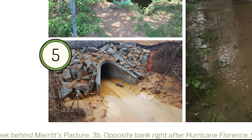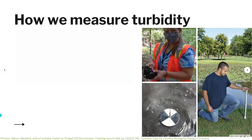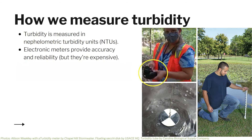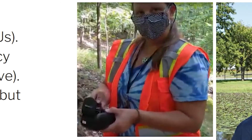Human activities that increase erosion — such as road building, overgrazing, development, dredging of channels, and poor erosion control at construction sites — can all increase turbidity in local waters. Turbidity is measured in Nephelometric Turbidity Units, which is quite a mouthful, so we just say NTUs. There are lots of ways to measure turbidity, including light meters and turbidity tubes.